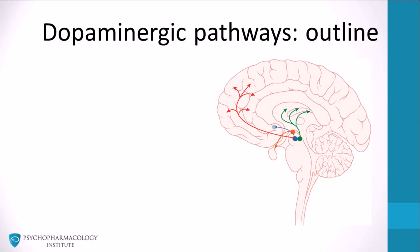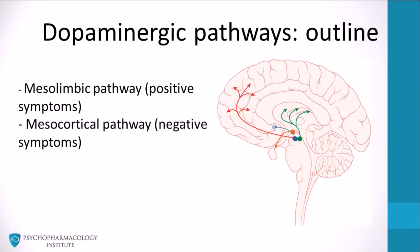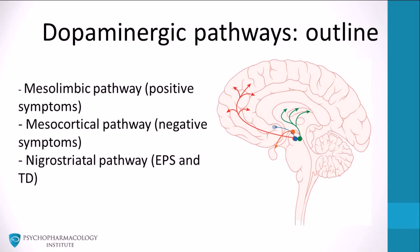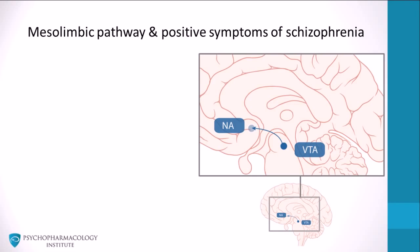By blocking these pathways, antipsychotics can produce both therapeutic and adverse effects. The four pathways relevant to the pharmacology of antipsychotics in the treatment of schizophrenia are: the mesolimbic pathway related to positive symptoms, the mesocortical pathway related to negative symptoms, the nigrostriatal pathway related to extrapyramidal symptoms and tardive dyskinesia, and the tuberoinfundibular pathway related to hyperprolactinemia.